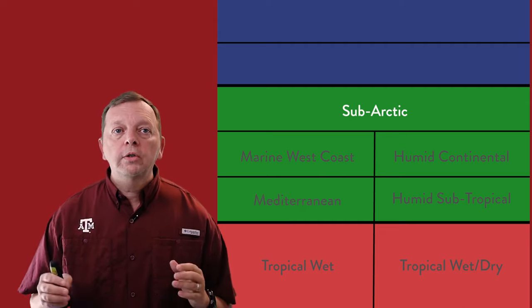The associated biome for a semi-arid climate is the steppe — a rolling grassland scattered with shrubs and isolated trees, also known as a semi-arid desert. The largest semi-arid region in the United States is found in the Great Plains, which early explorers called the Great American Desert. Today, it is one of the most productive agricultural regions in the world.